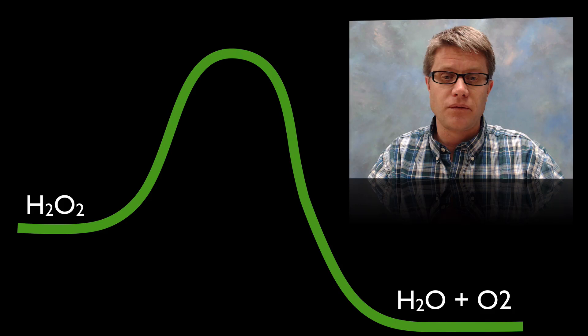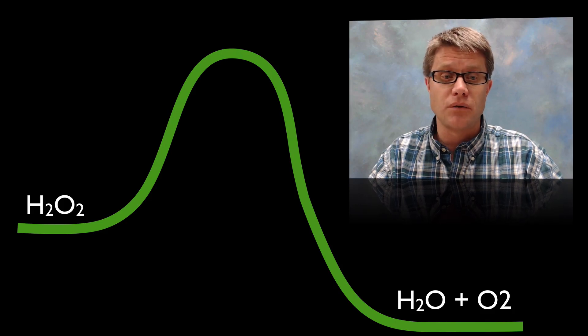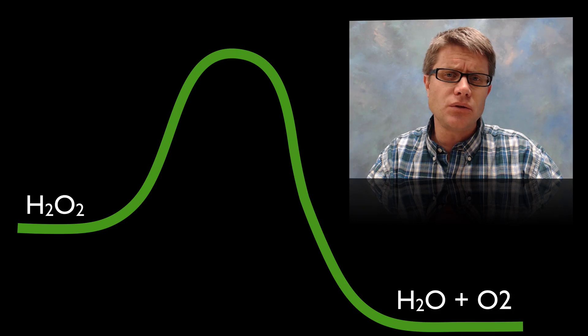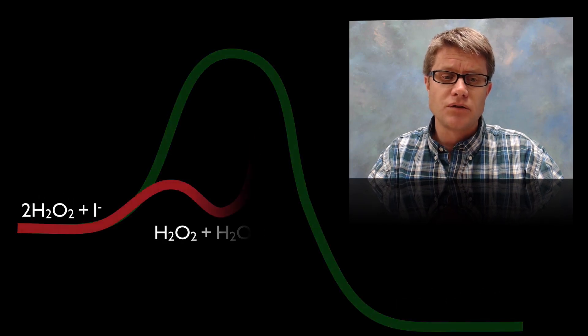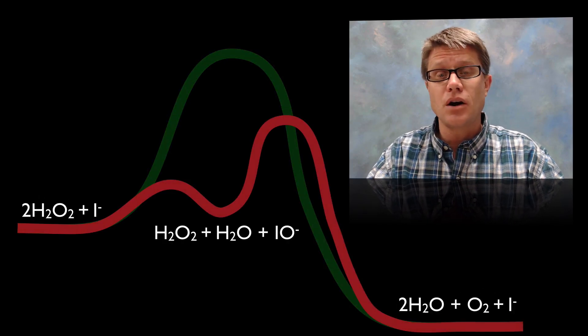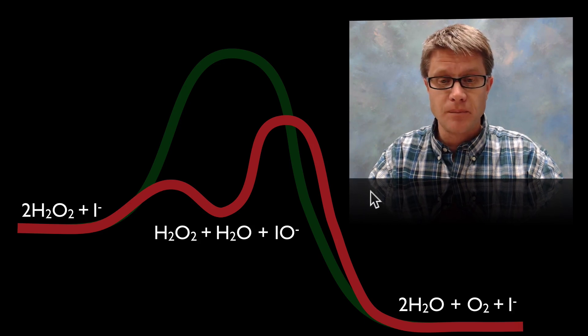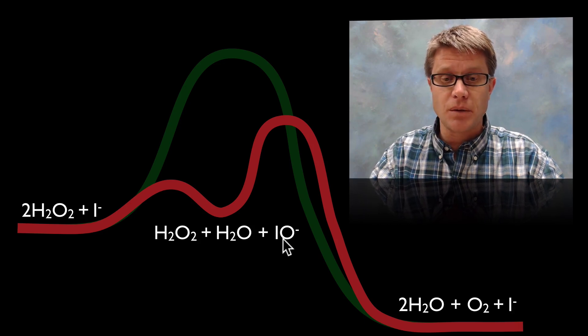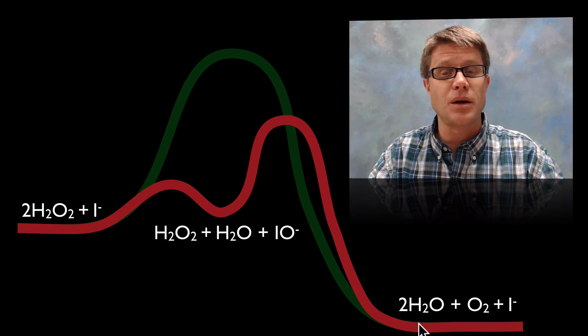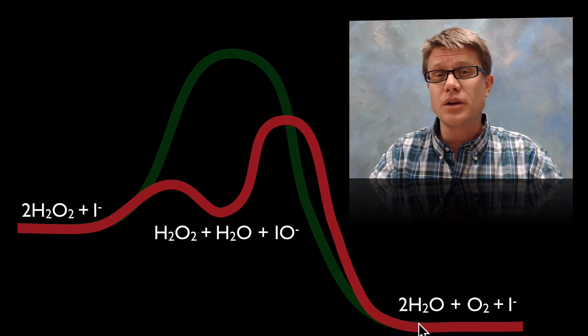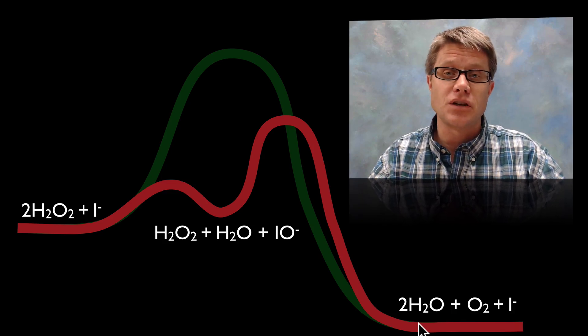Well what does that look like on an energy profile? This would be our original energy profile. We've got reactants on one side, products on the other. But if we look at this two step process, what we're doing is we're actually lowering the overall activation energy by doing two steps. In the first step we're freeing up that oxygen, then we're bonding it to the other hydrogen peroxide to make water. And so we've lowered the overall activation energy of that reaction.